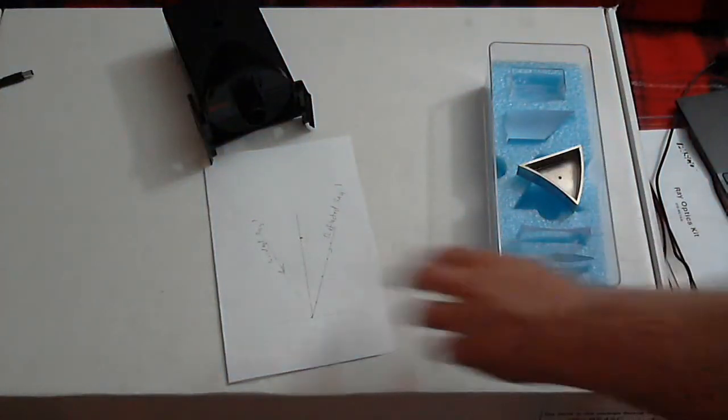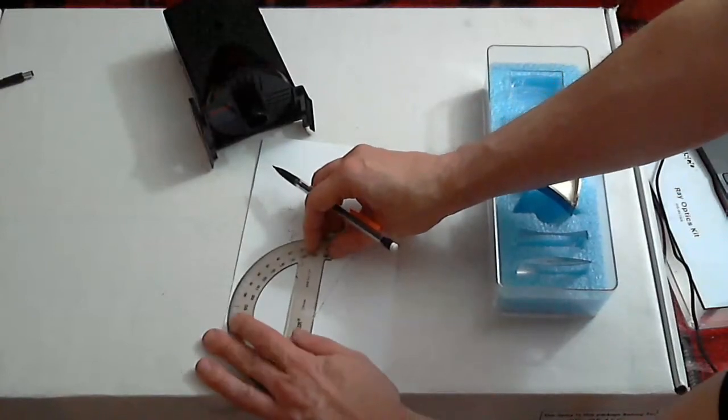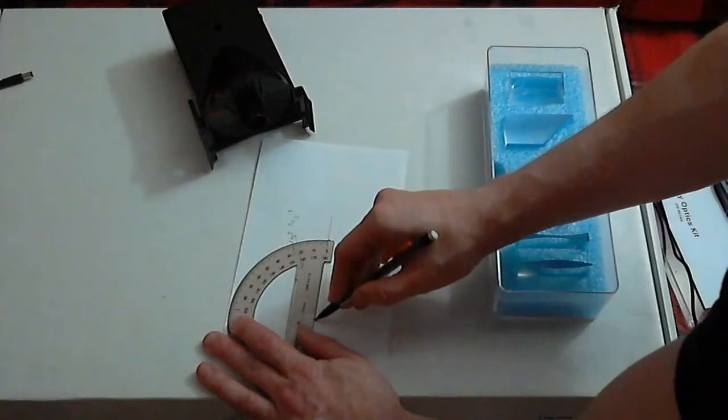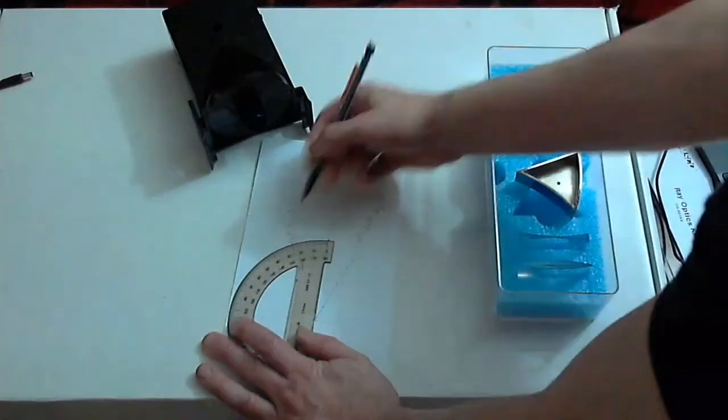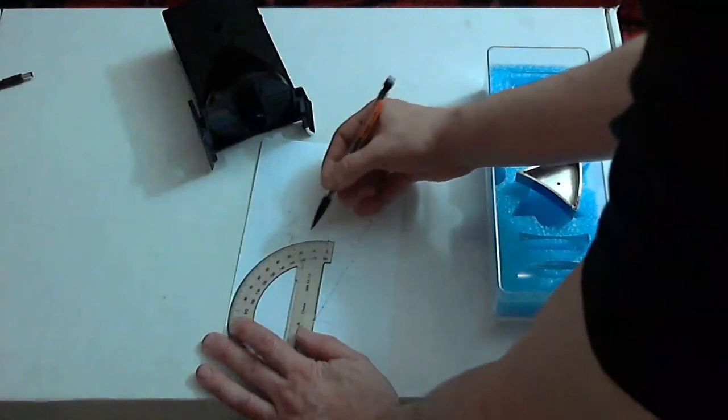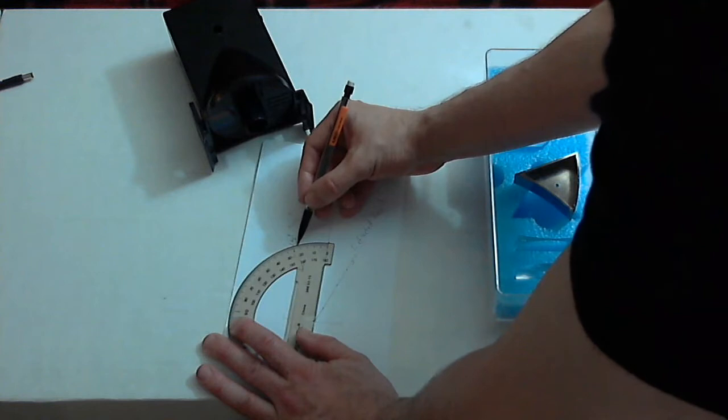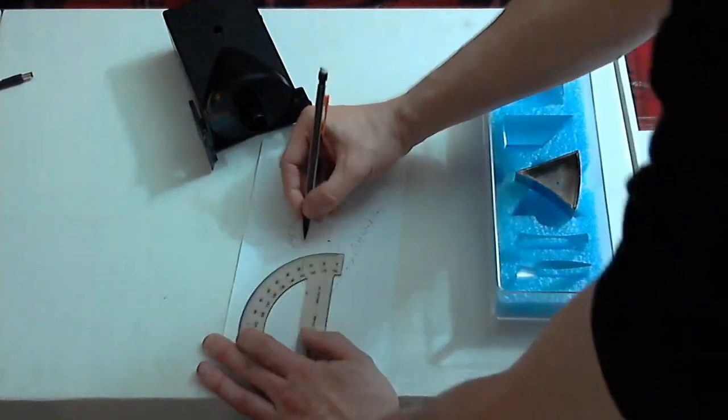Then use your protractor to make the measurements on one side. Make sure that the dot is still at the zero point and you align with zero. So I am counting approximately 22 degrees for angle of incidence one.